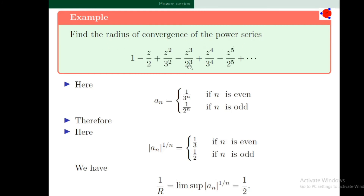Find the radius of convergence of the power series 1 - z/2 + z²/3² - z³/2³ + z⁴/3⁴ - z⁵/2⁵ + etc. The coefficient a_n equals 1/3^n if n is even, and 1/2^n if n is odd. The lim sup of |a_n|^(1/n) is the larger of 1/2 (from odd terms) and 1/3 (from even terms), which equals 1/2. Hence the radius of convergence is 2.